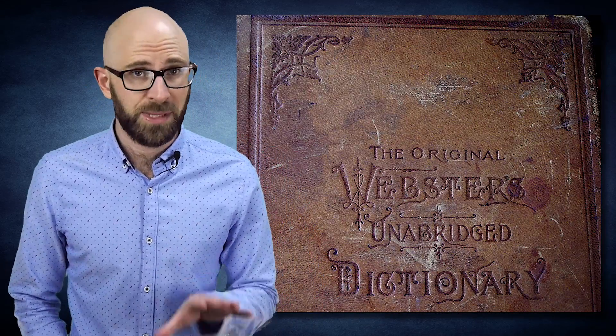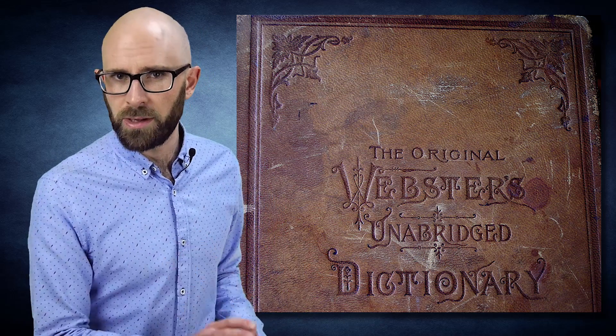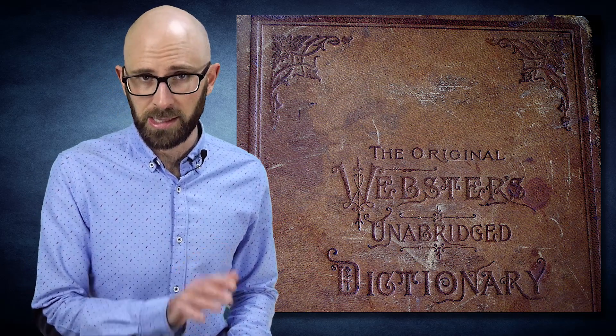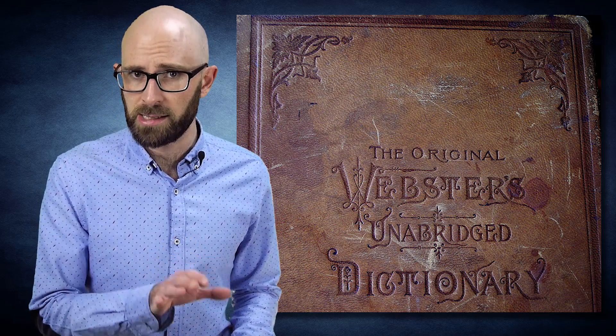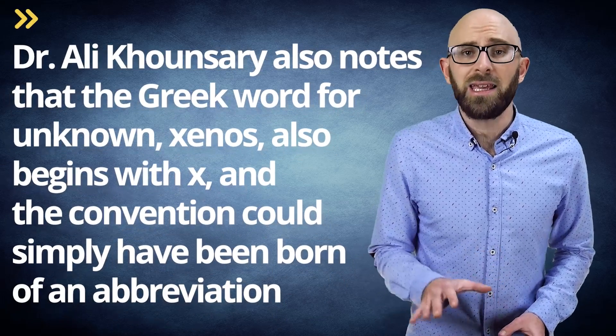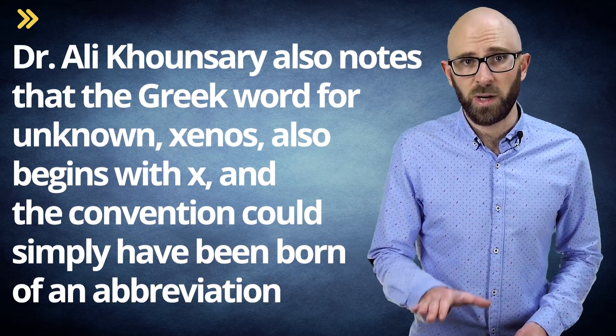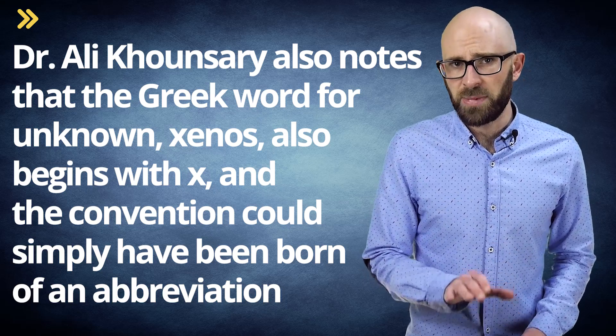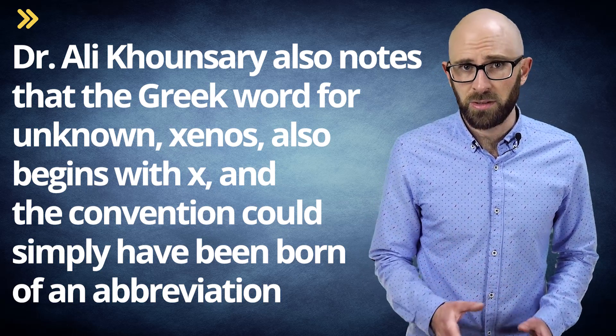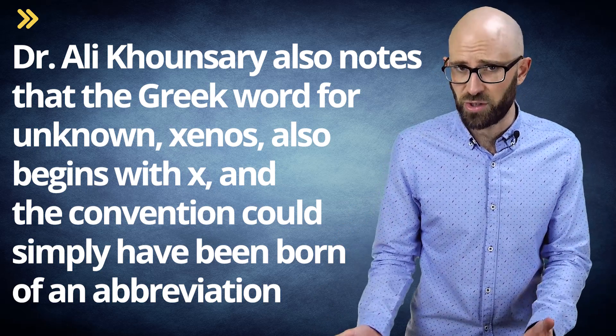According to the 1909–1916 edition of Webster's Dictionary, among others, a similar theory is put forward, stating that the Arabic word for the singular thing, 'sh,' was translated into the Greek 'zai' and later shortened to x. Dr. Alicancery also notes that the Greek word for unknown, xenos, also begins with x, and the convention could simply have been born of an abbreviation. But here again, we have a lack of any direct, documented evidence to support these theories.